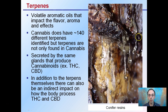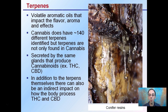Terpenes are volatile or aromatic oils that impact flavor, aroma, and effects. You can kind of see them dripping here. Cannabis has about 140 different terpenes identified, but terpenes are not only found in cannabis — as we see in this conifer resin from pine trees. They're secreted by the same glands that produce the cannabinoids such as THC and CBD.